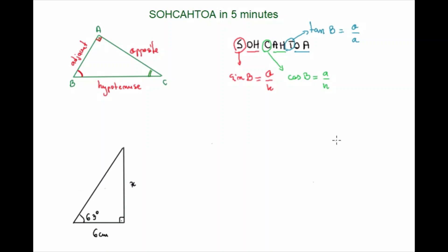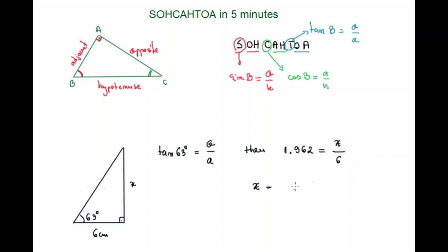In this next example, we have a right-angled triangle where we know the angle of 63 degrees, the adjacent side, and we need to find the opposite. We need a ratio that uses the opposite and the adjacent, and that ratio is the tangent. The tangent of 63 degrees equals 1.962, which equals the opposite over the adjacent, which is 6 centimeters. So x equals 1.962 times 6, which equals 11.77 centimeters, correct to two decimal places.